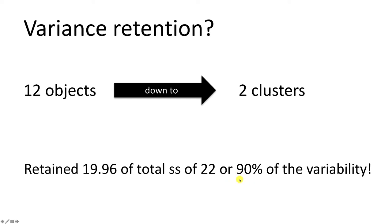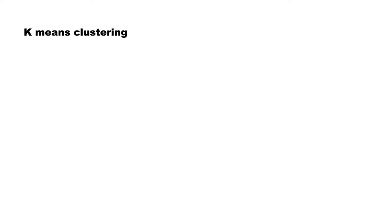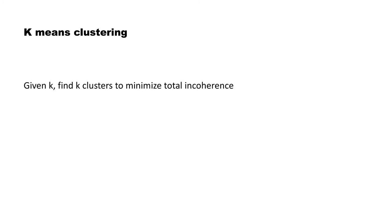We managed to retain 90% of the variability in the data while reducing complexity by one sixth — that's a good deal. So effectively, what we are trying to do with cluster analysis — specifically in K-means clustering — is a specific method of clustering. How much complexity reduction have we achieved?